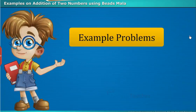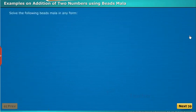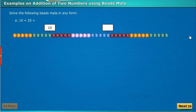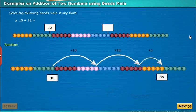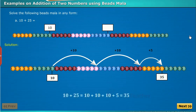Let us see a few examples on addition of two numbers using beads Mala. Solve 10 plus 25 with the help of beads Mala in any form. Here, first we have to count the beads up to the number 10. For the number 25, count the remaining beads in the form of 10s and 1s. So, we get 2 tens and 5 ones. After counting all the beads, let us now add them. The result is 35.